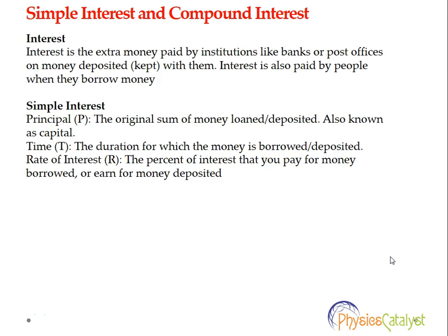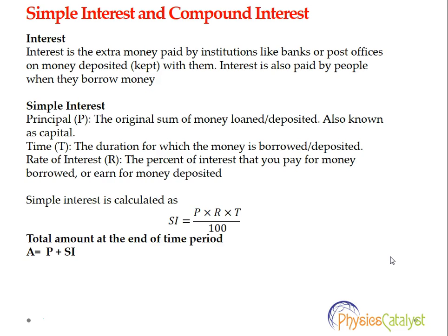Let's take a look at some terms to define simple interest. First is Principal, denoted by letter P — it is the original sum of money loaned or deposited, also known as capital. Time, denoted by T, is the duration for which the money is borrowed or deposited, generally given in years. Rate of Interest, denoted by R, is the percentage of interest paid for money borrowed or earned for money deposited, generally given per annum.